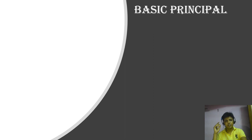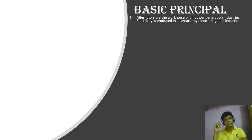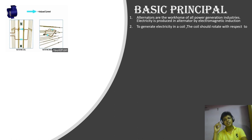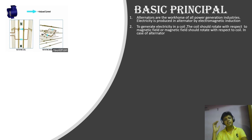Now we are going to discuss about the basic principle of the alternator. Alternators are the workhorse of all power generation industries. Electricity is produced in alternator by electromagnetic induction. To generate electricity in a coil, the coil should rotate with respect to the magnetic field or magnetic field should rotate with respect to the coil.